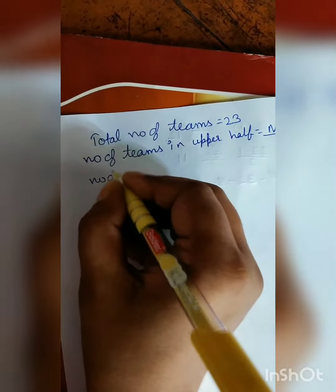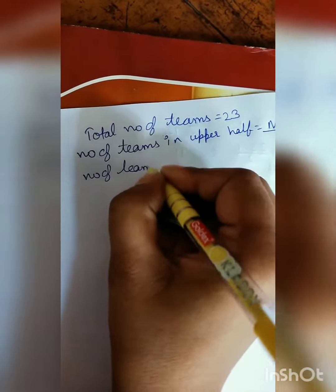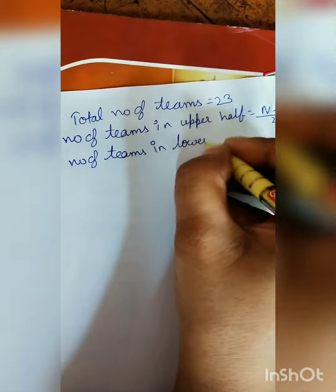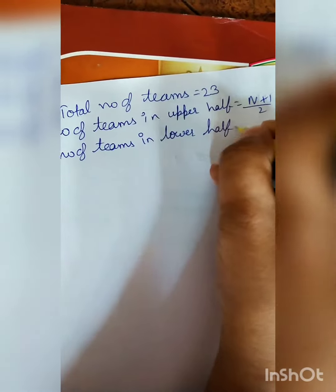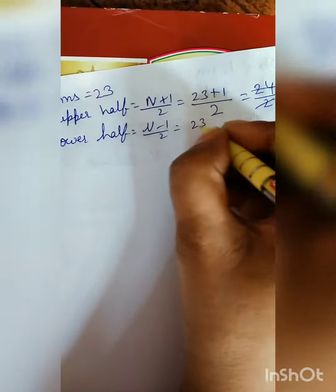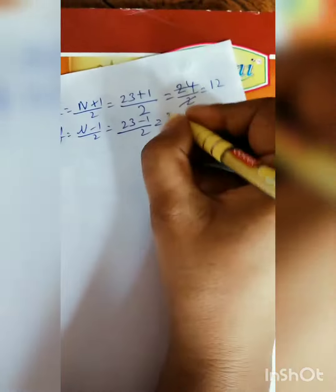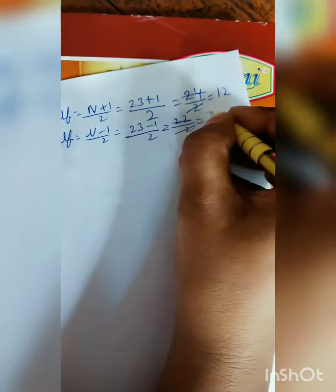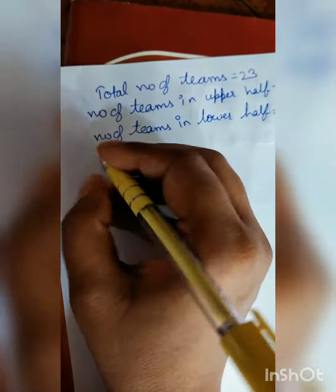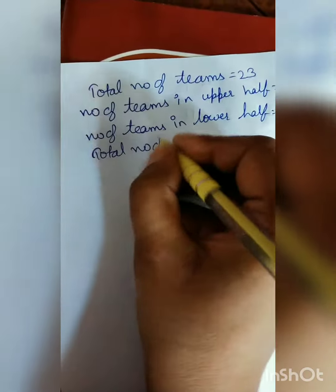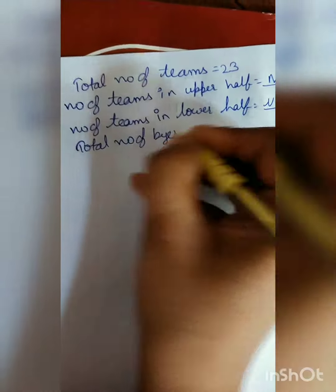Number of teams in lower half — formula is n minus 1 upon 2. n is 23, so 23 minus 1 upon 2 is 22 upon 2. Answer is 11. Then we will calculate total number of byes.